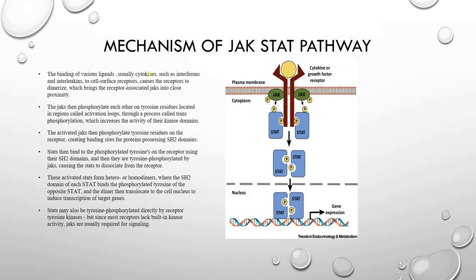Next is the mechanism of the JAK-STAT pathway. Before coming to the mechanism, note that these receptors differ from the RTKs. The receptor tyrosine kinase that we studied in the transmembrane enzyme-linked receptor is not having any intrinsic catalytic domain. So in RTKs, we have seen there was an intrinsic catalytic domain. Agonist-induced dimerization alters the intracellular domain conformation to increase its affinity for cytosolic tyrosine protein kinase.